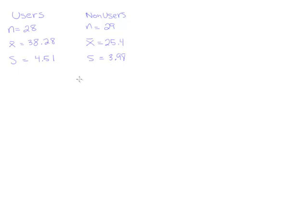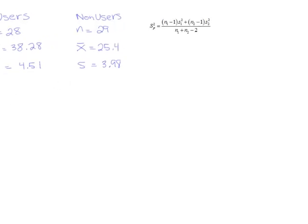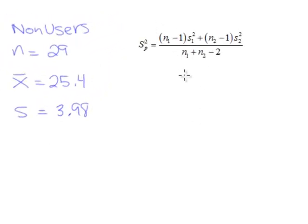So since we said equal variances, to do the test stat, the first thing we need to do is calculate the pooled sample variance. So here's the formula for our pooled sample variance.